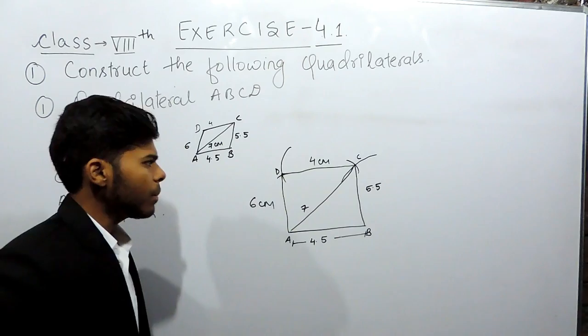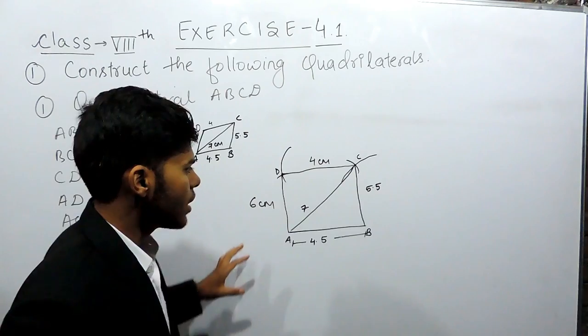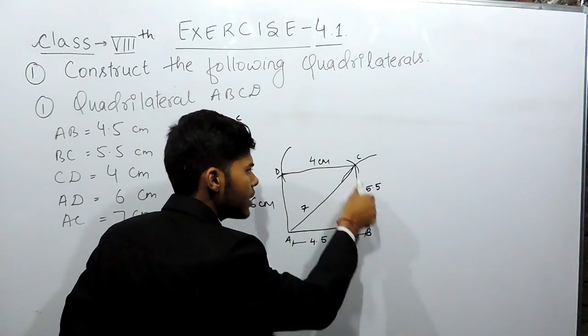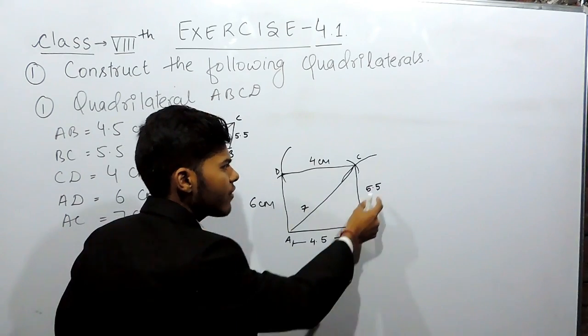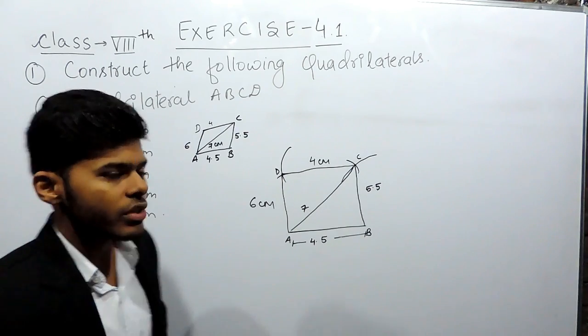Now, one thing that you should keep in mind that this figure that I have drawn might not match the figure that is given in your book. But this is the procedure to draw. Because the measurements that I have taken must not be equal to 4.5, 5.5 or 4. But this is the procedure. This is how you can draw these type of constructions.